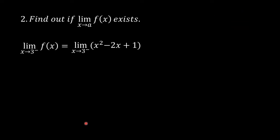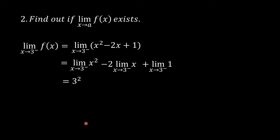Substituting x equals 3: 3 squared minus 2 times 3 plus 1 equals 9 minus 6 plus 1, which equals 4. So the left-hand limit is 4.